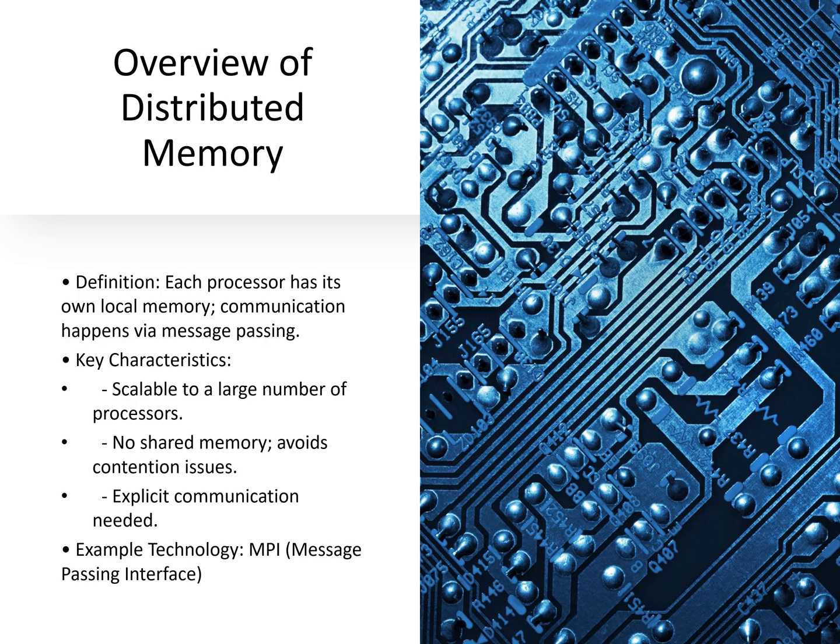A key point of distributed memory is that it can work with many processors at once. There is no shared memory, so it avoids the problem where multiple processors try to access the same memory. Processors need to actively send and receive messages to work together. An example of a distributed memory framework is MPI, Message Passing Interface, which is widely used in high-performance computing.